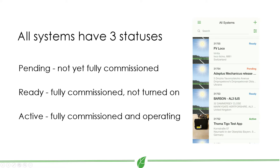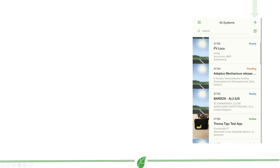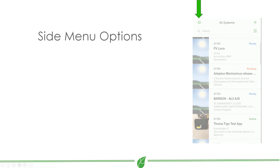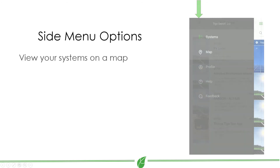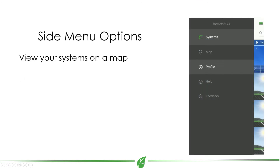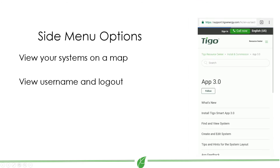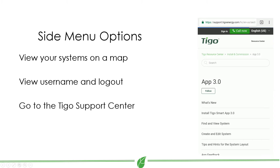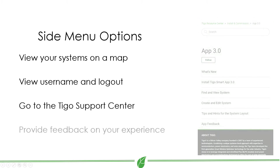From the All Systems page, you can create a new system by clicking the plus sign at the top right of the page. And from the side menu, you can view systems via a map view, view your username and log out, or go to the Tygo Support Center for help and additional documentation.